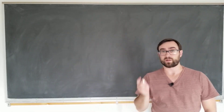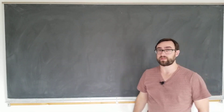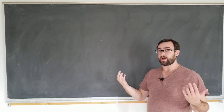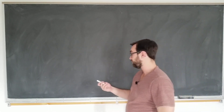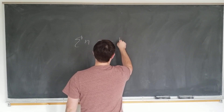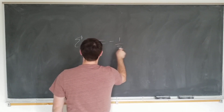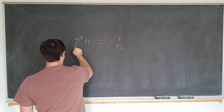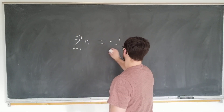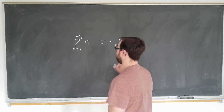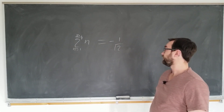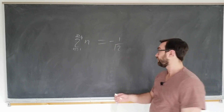Hello everyone, welcome to Model Sleeve Math. Today we will be looking at some infinite products and assigning values to ones that shouldn't have values. In the same way that we are able to sum up all the integers and get minus 1/12th, we are similarly going to be multiplying numbers together and obtaining seemingly nonsensical answers.